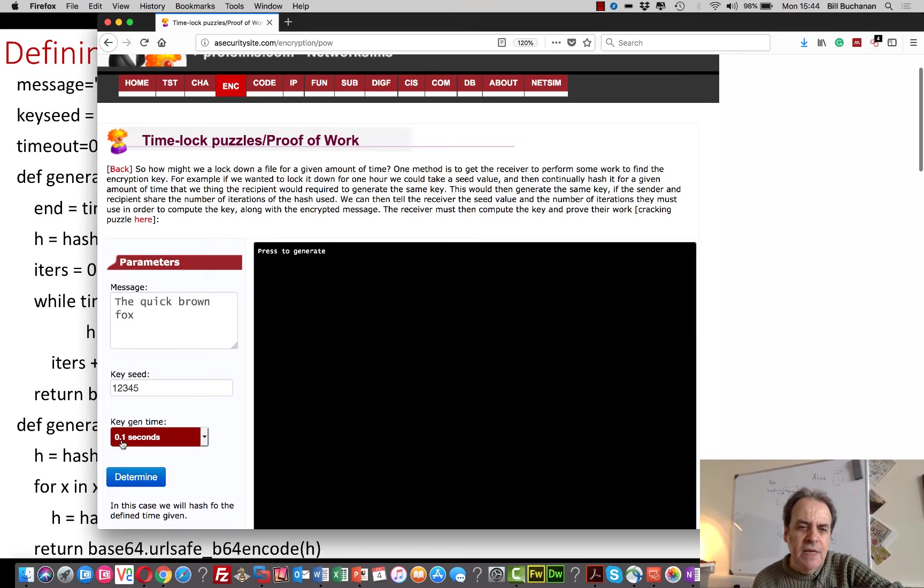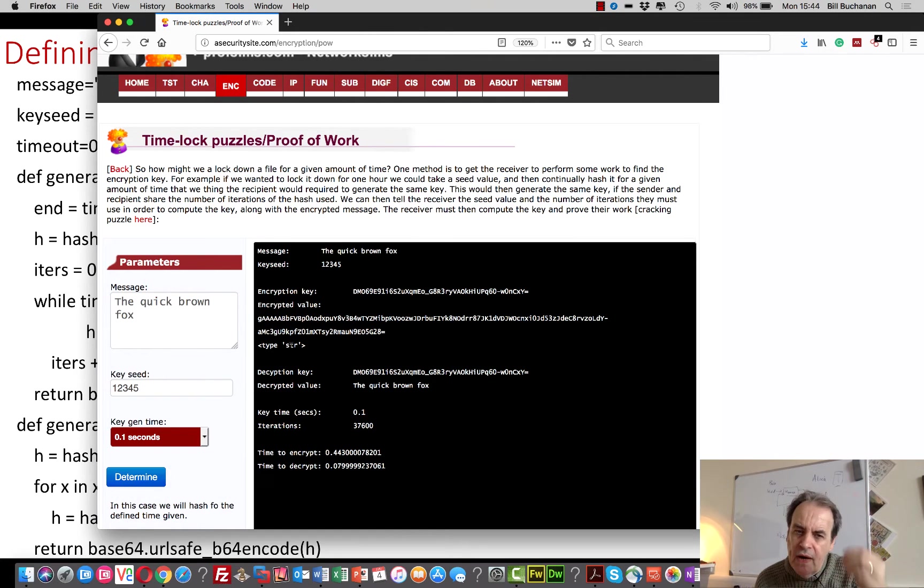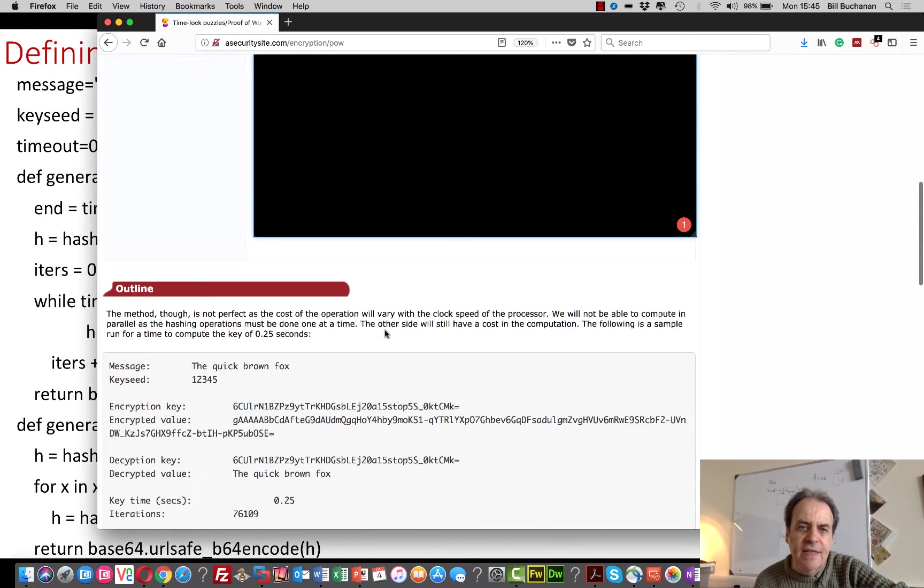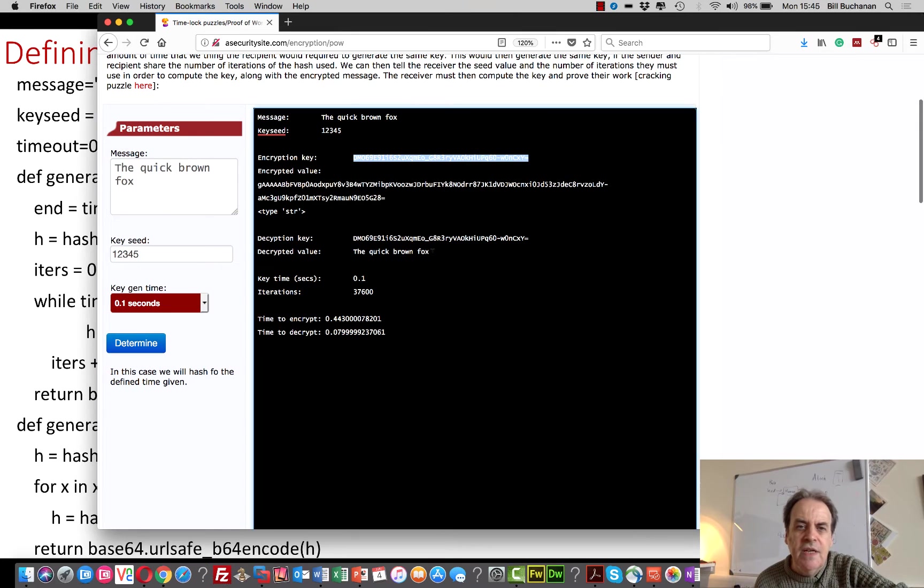In this case it will do 0.1 of a second and it has the seed, and it will go around the loop until it generates for 0.1 seconds the hashed value based on the seed. So in this case we end up with this as our encryption key, and then we put it into the Fernet method which will do an AES encryption for us and we end up with our cipher. If we then use this number of iterations to go around the seed value, then we can result in the same key and be able to decrypt the value.